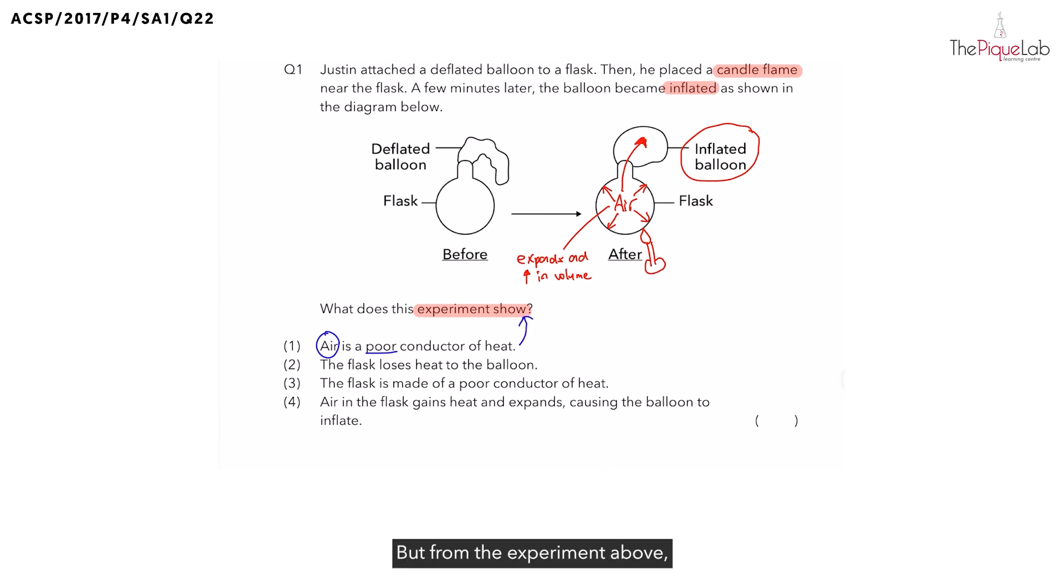But from the experiment above, can we tell that air is a poor conductor of heat? No. So we can write down option one is not shown in the experiment above. Which means even though air is a poor conductor of heat, can we choose this as our answer? No. So let's cross it out.